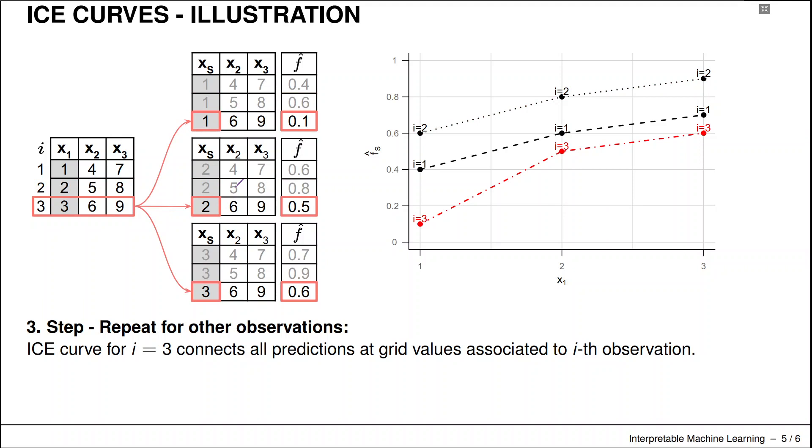We also do this for the third data point, and that gives us all three ICE curves for our dataset with n=3. If we do that for each training instance, we get exactly as many ICE curves as we have points in our training dataset.